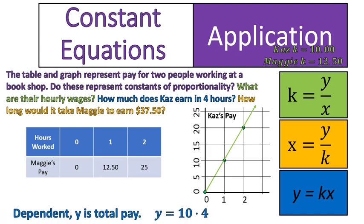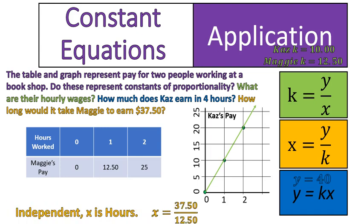How much does Kaz earn in four hours? This is calculating the dependent, his pay. His pay depends on how many hours he works. So that is how you would calculate it using the blue equation. The constant of $10 per hour times the four hours he works will give that Kaz is earning $40 in those four hours. Let's put that up there.